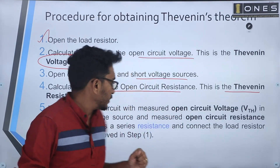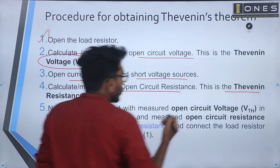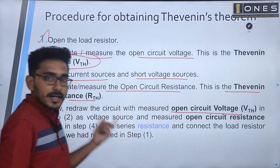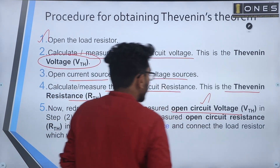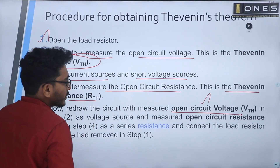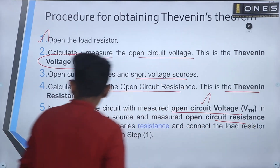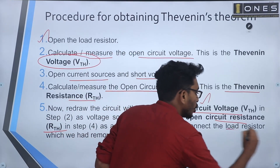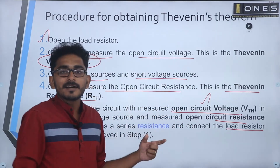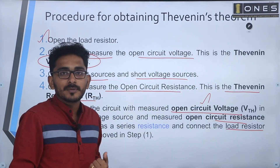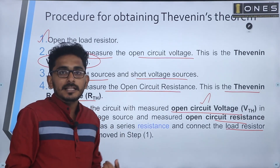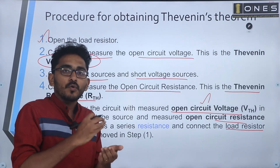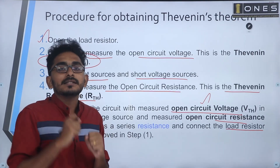Redraw the circuit with the measured open circuit voltage. The circuit is redrawn with open circuit voltage VTH in series with the Thevenin's resistance RTH, and this is connected in series with the load resistance. The equivalent circuit is the Thevenin's equivalent circuit — a voltage source and resistance in series.